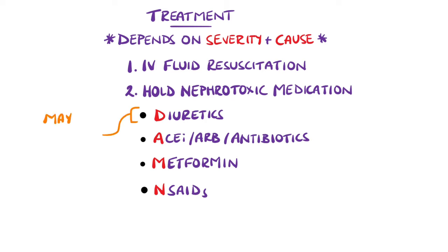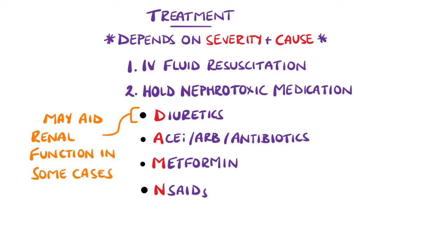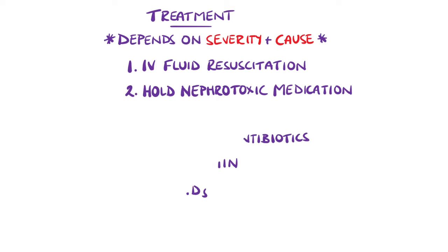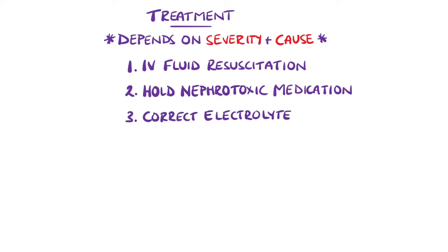In some cases, nephrotoxic medication may need to be continued, such as in fluid overload secondary to heart failure, where the diuretics may actually end up increasing renal function. If electrolyte imbalances are present, then they should also be corrected.